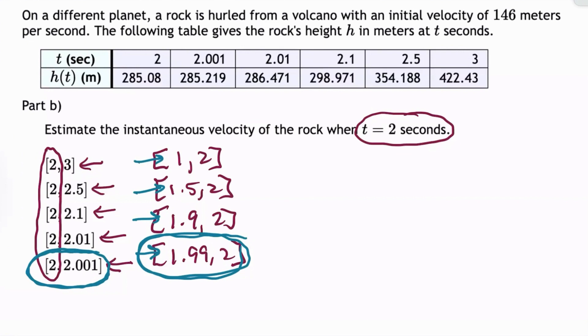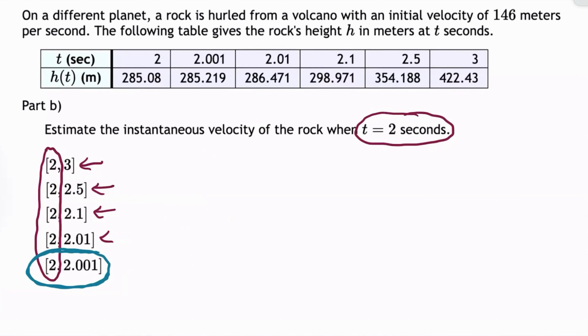However, in this problem, we don't have boundaries approaching 2 from the left. We only have boundaries approaching 2 from the right. So how do we handle that? Well, we calculate all the average velocities, and if they seem to be following a reasonable pattern, we use the average velocity from the smallest interval to estimate the instantaneous velocity.